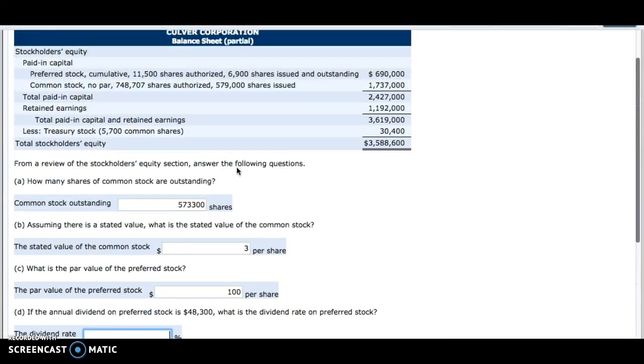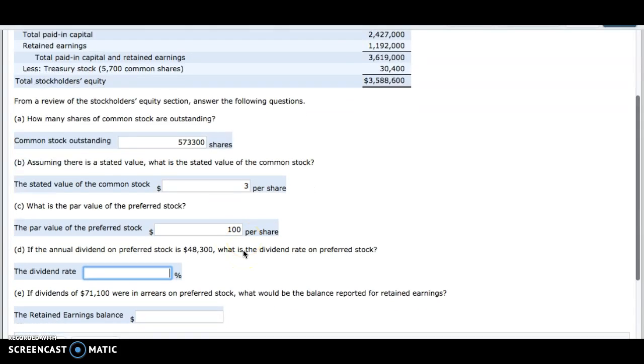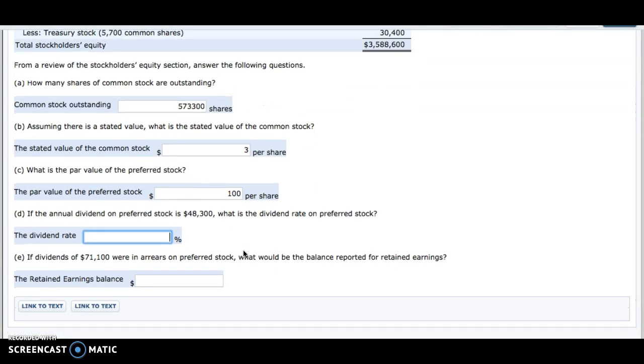And the shares, as we found, have a par value of $100, so we would take 7 divided by 100, and we get 7%. So our dividend rate on preferred stock is 7%.